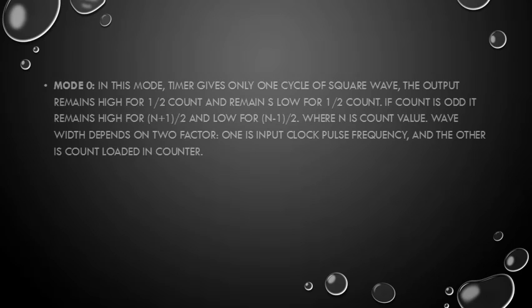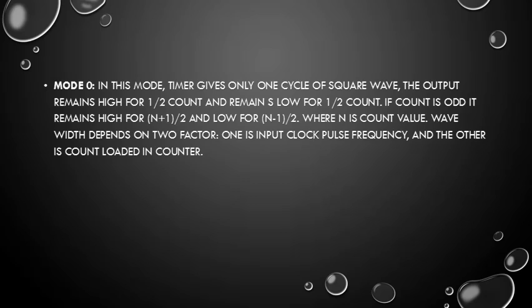Mode 0: in this mode the timer gives only one cycle of square wave. The output remains high for half the count and remains low for the other half. If the count is odd, it remains high for (N+1)/2 and low for (N-1)/2, where N is the count value.